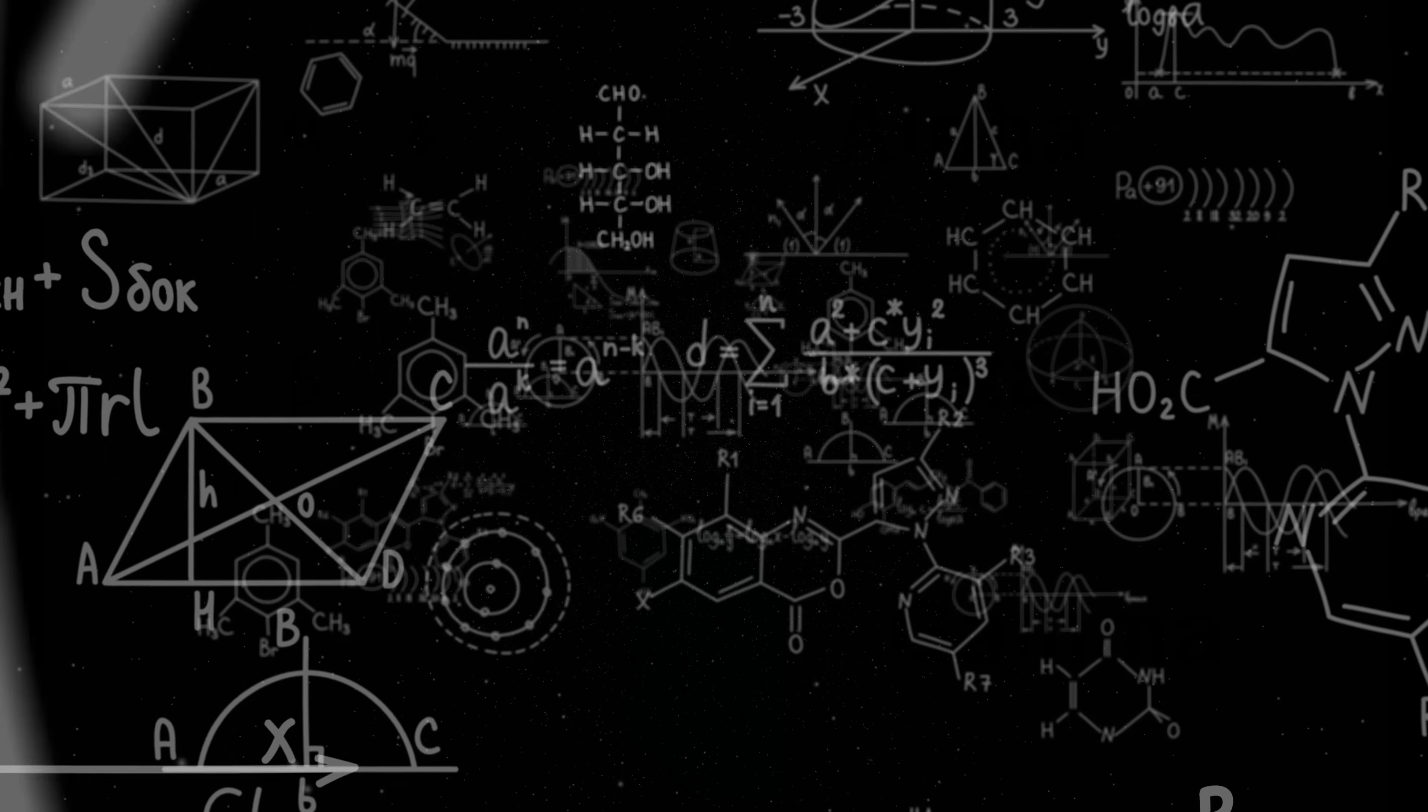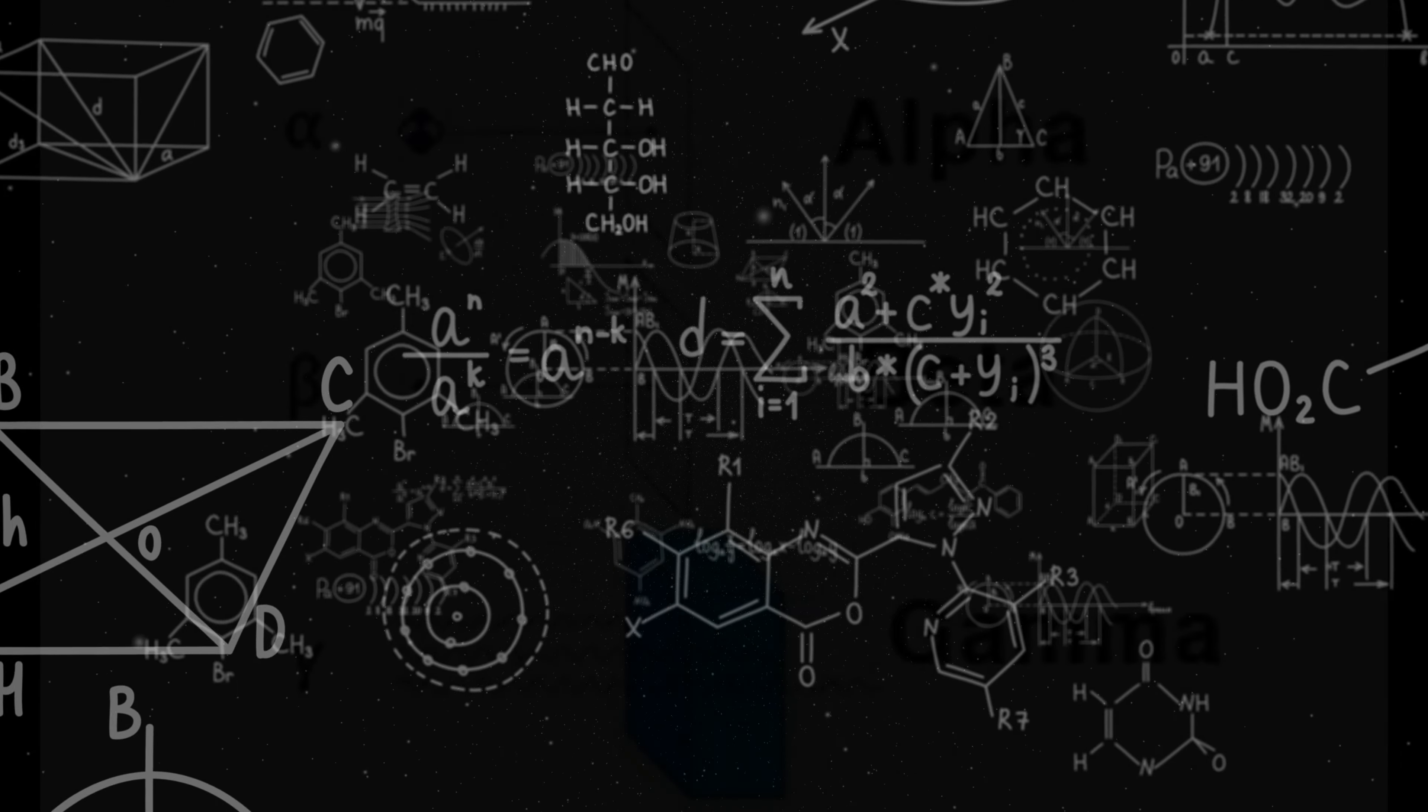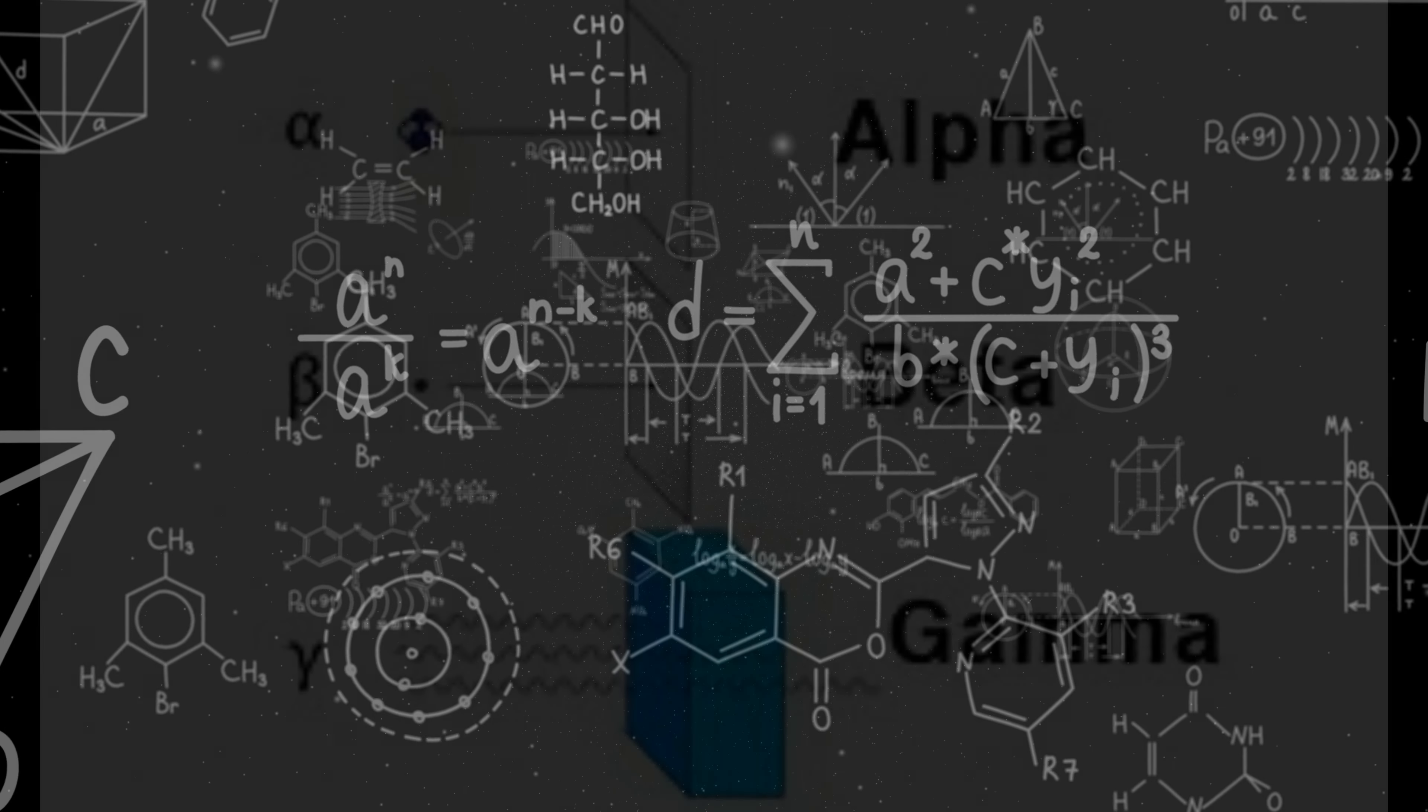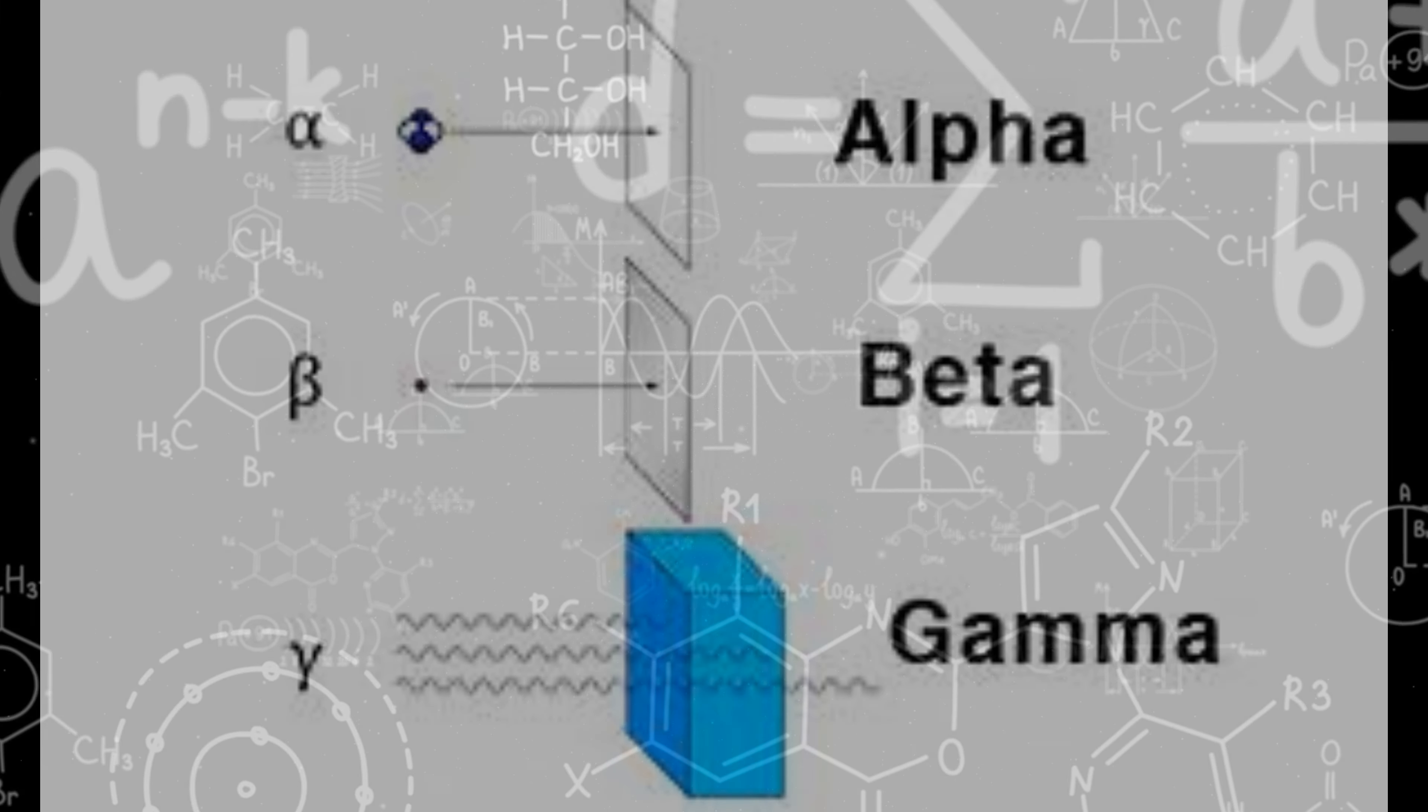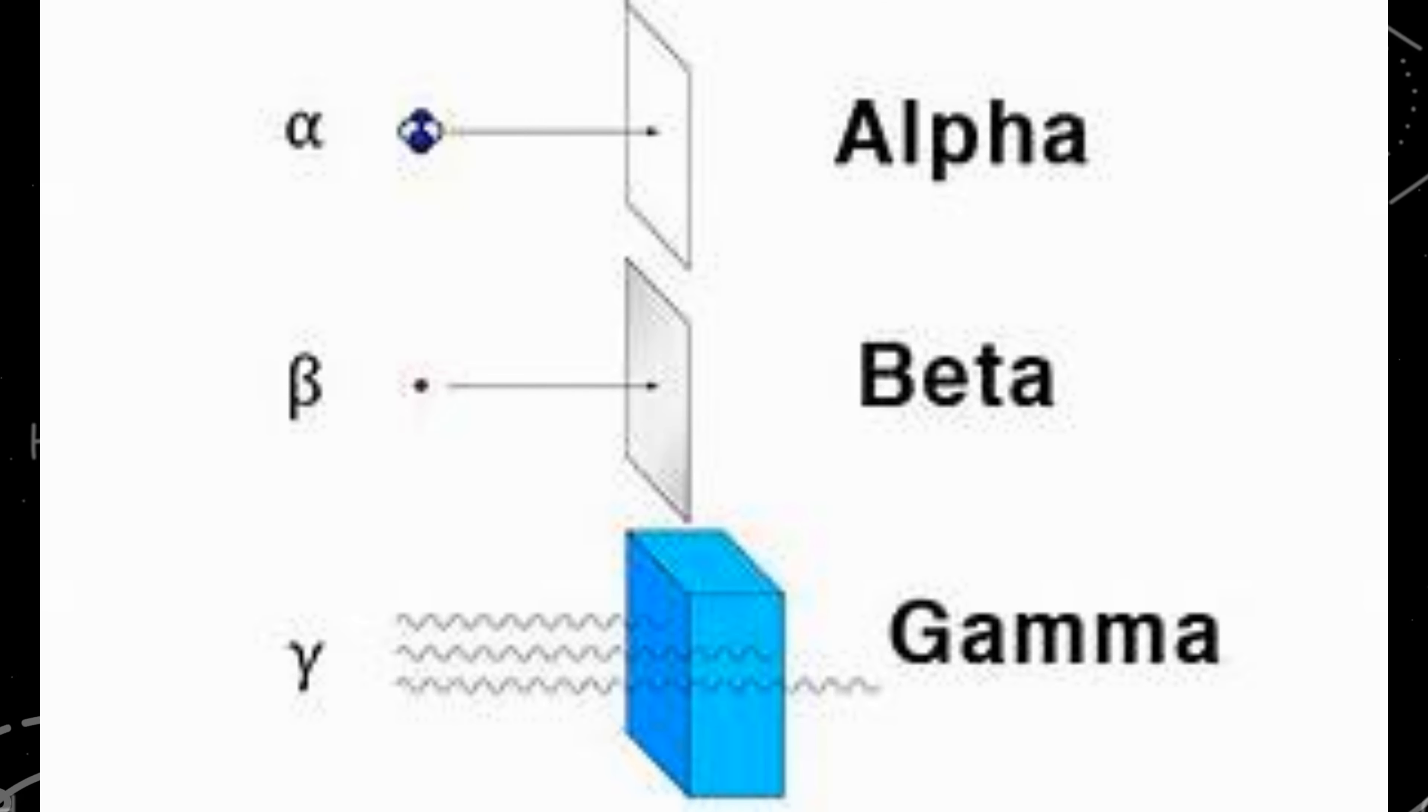These are alpha particles, beta particles, and gamma rays. Alpha and beta are two kinds of particles, whereas alpha particles are heavy helium nuclei which are positively charged. They have two protons and two neutrons, giving them a mass number of 4 and an atomic number of 2—doubly charged helium atoms.